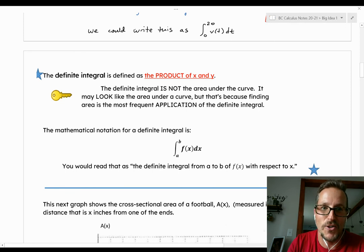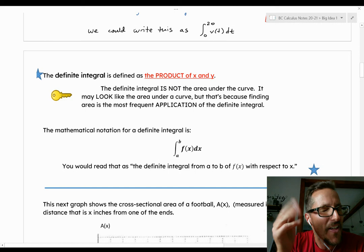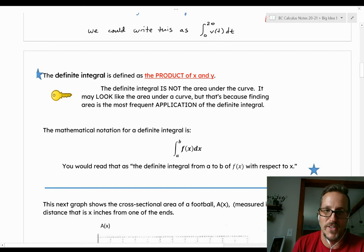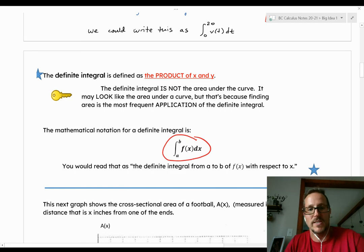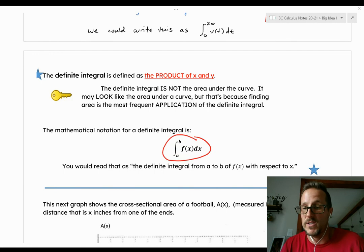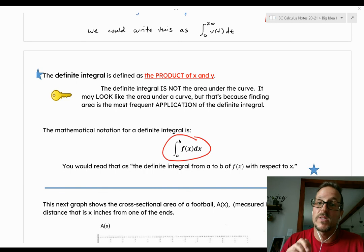Say it with me. Definite integral is a... That's right. A product of X and Y. So how that looks on paper, you see it here. The definite integral looks like this symbol. So that we would say that's the definite integral from A to B of f(x) with respect to X. So you get that same kind of language there with respect to X. The language of derivatives, the derivative with respect to X. Well, we're going to integrate with respect to X as well.